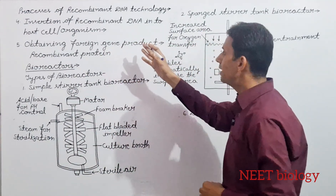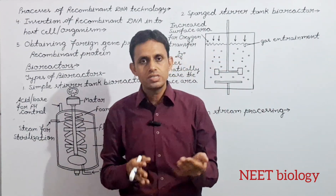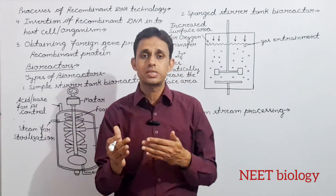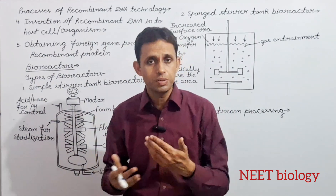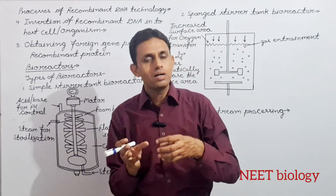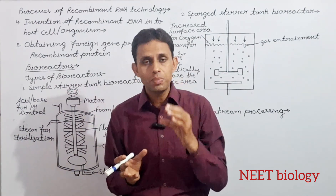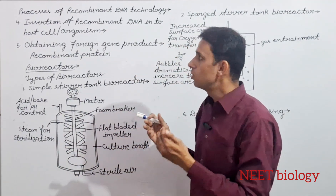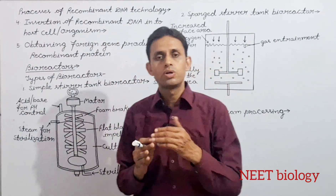Next step है insertion of recombinant DNA into the host cell or organism। जब gel electrophoresis के दोरा DNA fragments को अलग कर लेते हैं और PCR के process द्वारा desired gene की multiple copies prepare कर लेते हैं, तब इस desired gene को plasmid के अंदर cut लगाकर वहाँ पर ligase enzyme के द्वारा ligate करवाते हैं। इस तरीके से recombinant plasmid या recombinant DNA तैयार हो जाता है।